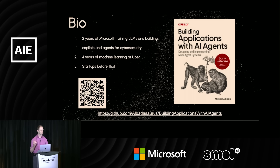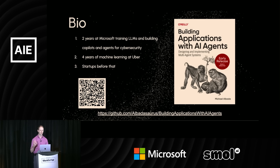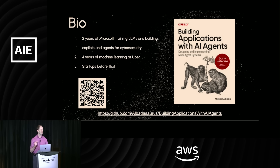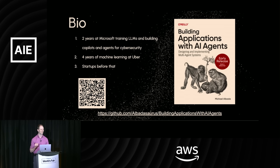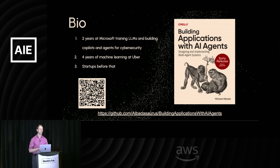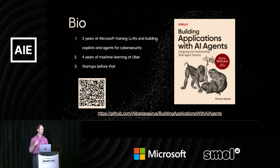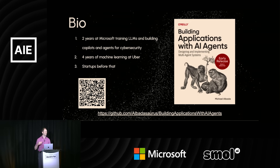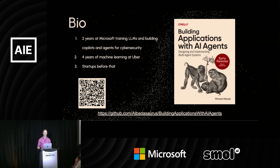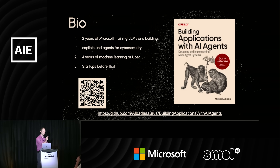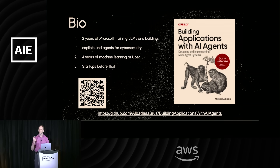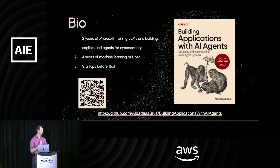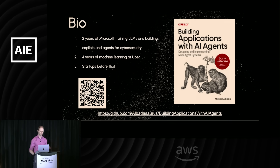Before that, I spent four years working on machine learning at Uber — lots of big geospatial problems — and I was in startups before that. This talk is really a distillation of a 300-page book I have coming out with O'Reilly. The first seven chapters are already up on early release on the platform, and it is going to print next month. While I'll be focusing mostly on slides, I won't get too deep into code, but there are full code examples backing everything I'm describing here.